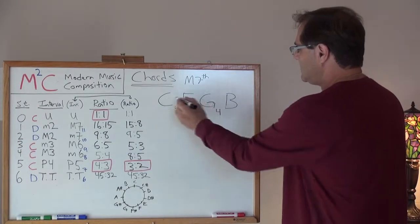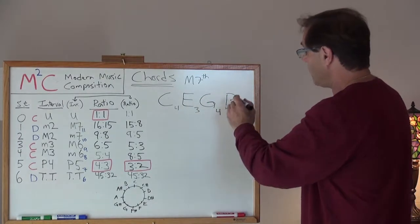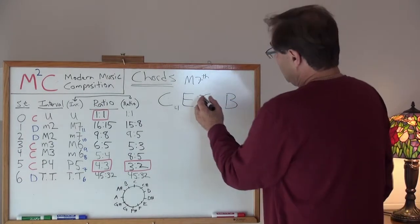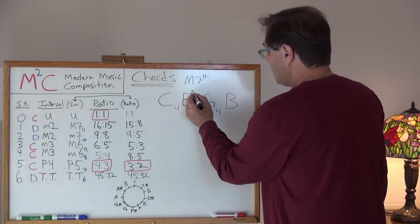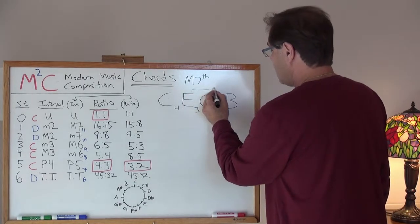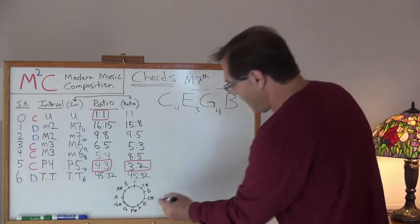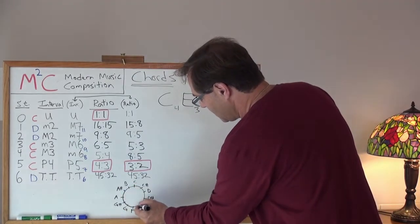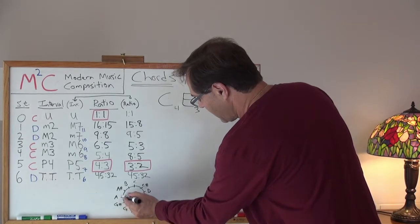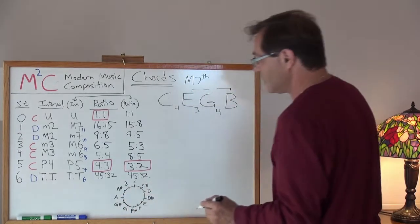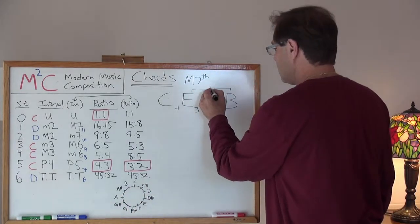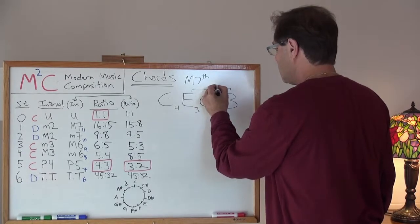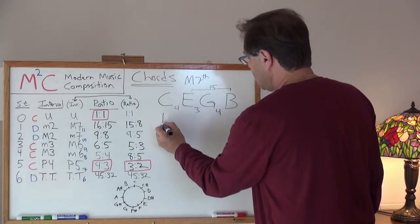Now, I've introduced C, E, G, B. Well, let's go through some of the motions here. Between E and B, what do we have between E and B? Well, we've got one, two, three, four, five, six, seven. So, we have a perfect fifth. Well, what do we have between C? Of course, I left it till last, right?